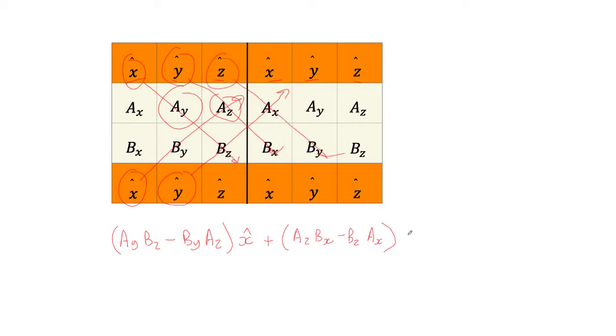And similarly for Z, you go down like this. A_x B_y and up from here minus B_x A_y. Now that's in the Y direction and this is in the Z direction. So that is a cross product A cross B. Hopefully that makes it a bit easier to remember.